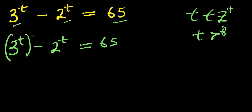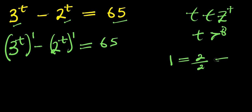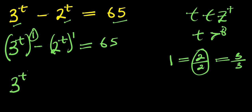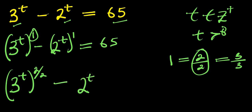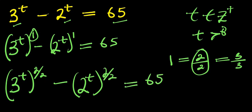We can raise this to the power of 1, which is the same thing. Now let's apply the idea of equivalent fractions — 1 is like writing 2 over 2 or 3 over 3. We replace this 1 with 2 over 2, so we have 3^t raised to the power of 2 over 2, minus 2^t raised to the power of 2 over 2, and this equals 65.